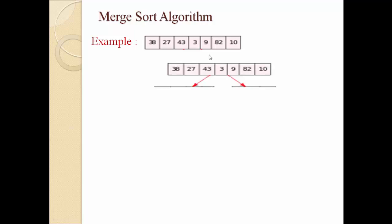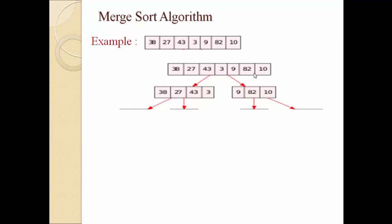As per the Merge Sort Algorithm, the first part contains 38, 27, 43, and 3, and the second part will have 9, 82, and 10. Whenever there is an even number of elements, both left and right parts will have the same number of elements. Whenever there is an odd number of elements, one part will have one element more than the other.